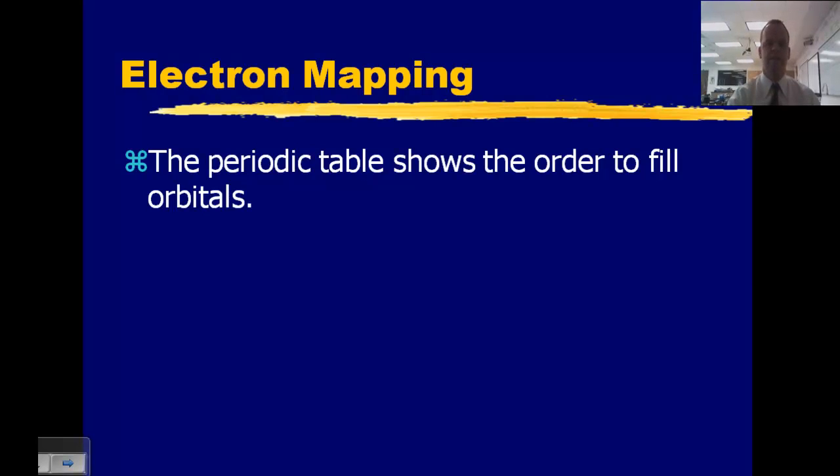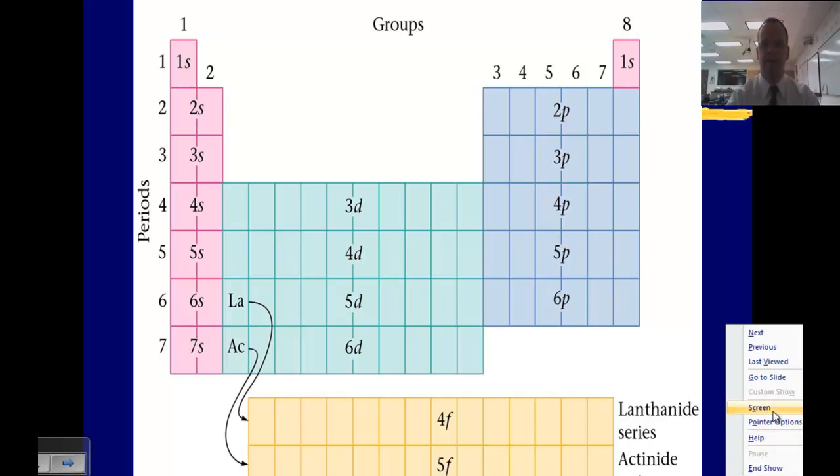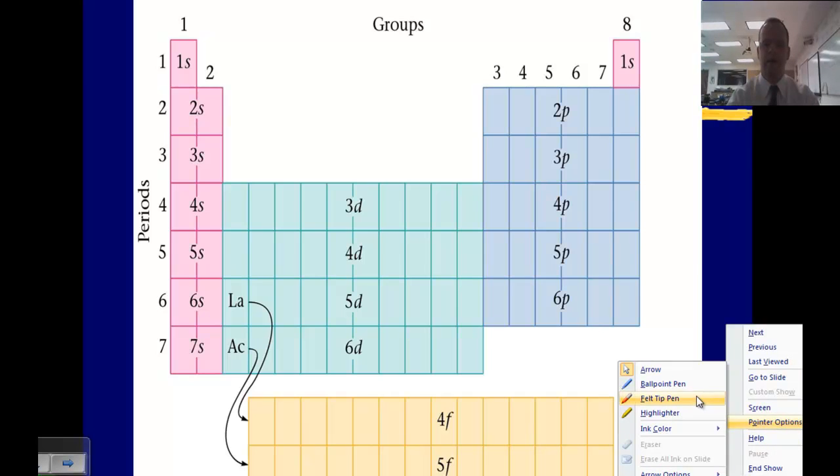The orbitals all make sense in terms of the columns and rows of the periodic table. Looking at this diagram, we see the periodic table listed by the final orbital that is filling for each element. On the left-hand side we have the alkaline metals and alkaline earth metals. There's only two columns because it is filling the s orbitals.